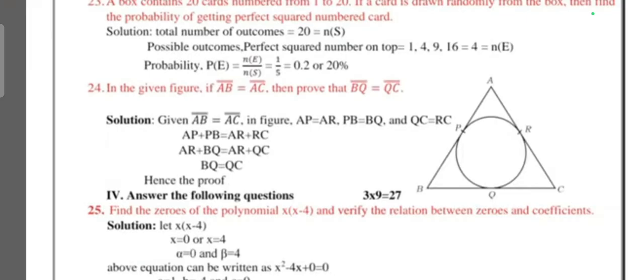Question 23: Box contains 20 cards numbered from 1 to 20. The card is drawn randomly from the box. Then find the probability of getting a perfect square number card. Question 24: In the given figure, if AB = AC, then prove that BQ = QC.